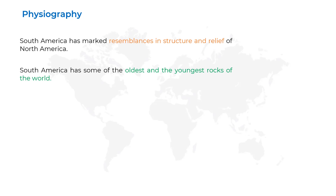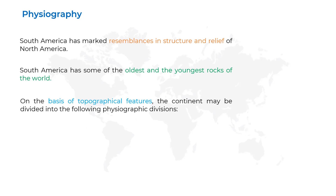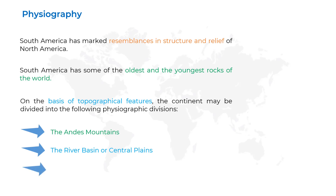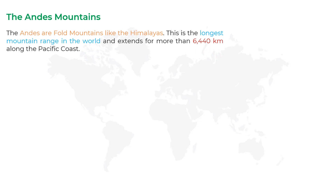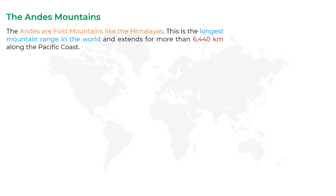On the basis of topographical features, the continent may be divided into the following physiographic divisions: the first one is the Andes Mountains, the second one is the river basins or central plains, and the third one is the Eastern Highlands. The first division is the Andes Mountains. The Andes are fold mountains, like the Himalayas.